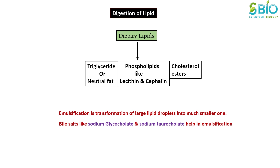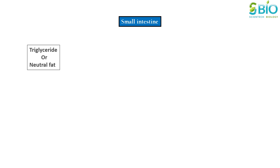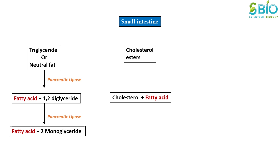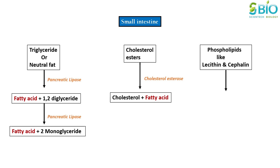The primary location of lipid digestion is the small intestine, where strong emulsifiers synthesized by the liver are present together with strong lipid digestive enzymes synthesized by the pancreas. Pancreatic lipase digests triglycerides into component fatty acids and monoglycerides. Pancreatic cholesterol esterase digests cholesterol esters into component cholesterol and fatty acids. Pancreatic phospholipase digests phospholipids into their component head group and fatty acids.